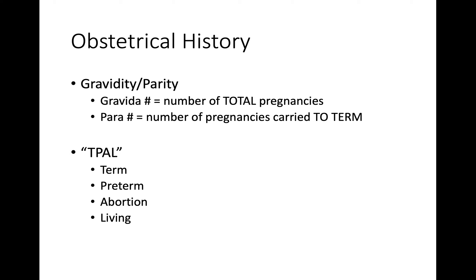Moving forward, we have the obstetrical history. A quick review: gravidity and parity. The gravida number is the total number of pregnancies — how many times the mom has been pregnant. The para number is the number of pregnancies carried to term, and that does not include TPAL. T is term, P is preterm, A is abortion, and L is living. The para number does not include aborted fetuses or preterm births — it includes only pregnancies carried to term. Make sure you review the parameters used to judge what is term, preterm, abortion, and living before your evaluation.